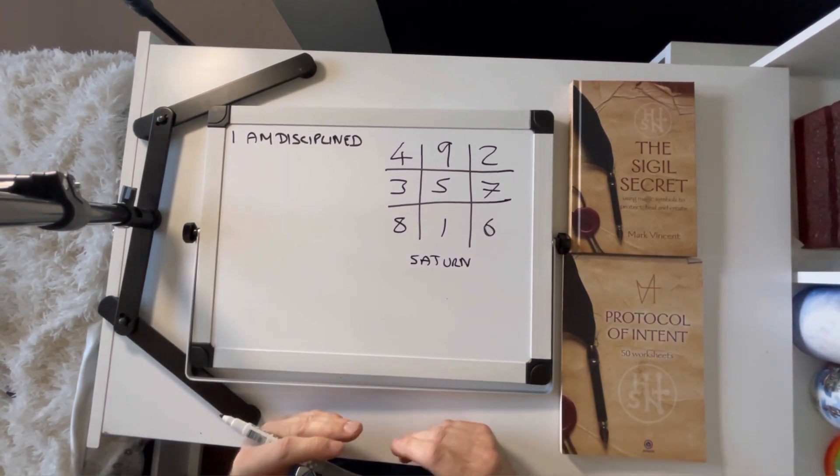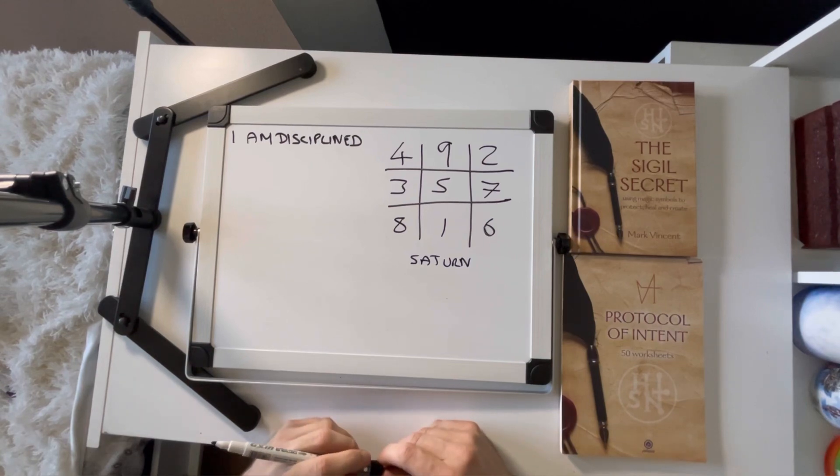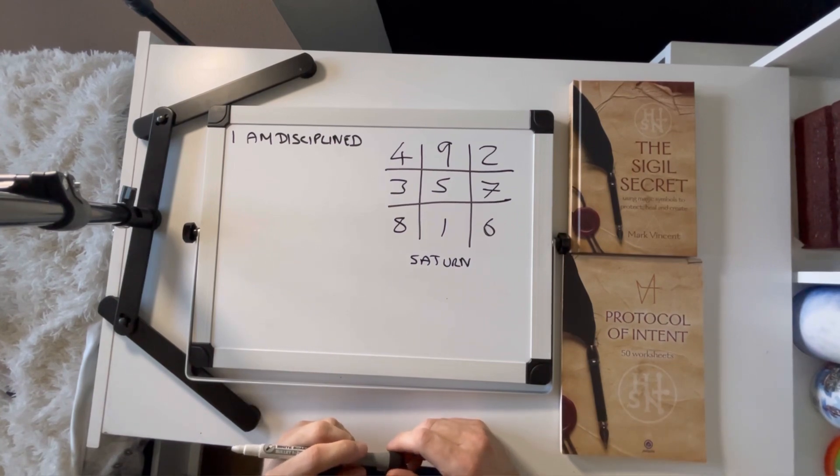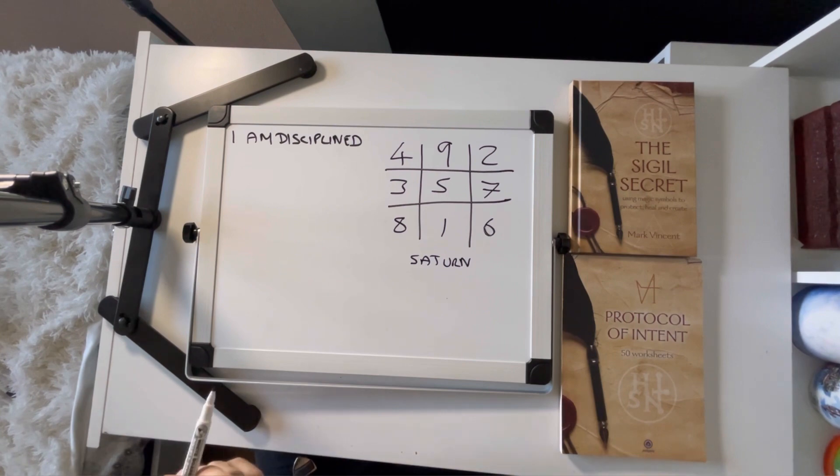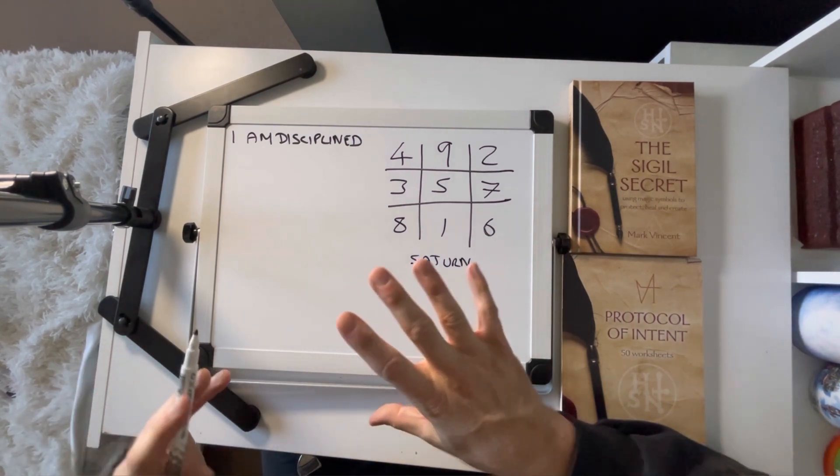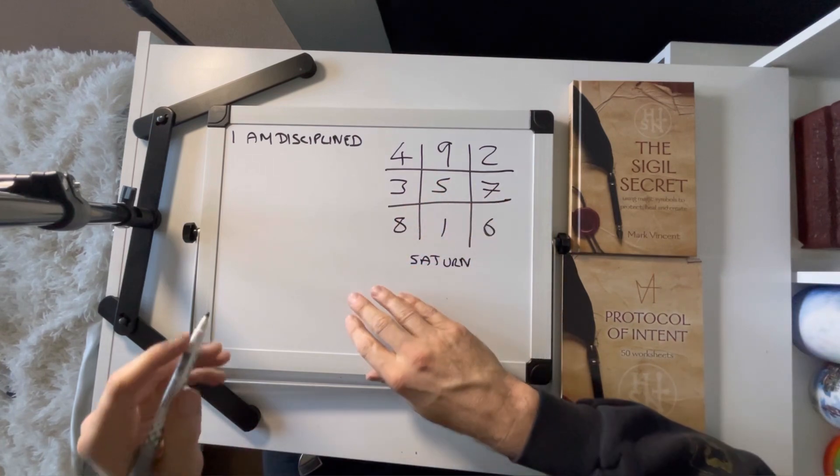So I'm using the Square of Saturn partly because it's the easiest one to demonstrate with. And so I've chosen a Statement that fits with that square: I am disciplined. This is quite a generally useful one in life anyway. So what I'm going to do first is I'll make the letter sigil and then I'll make the planetary sigil for you.